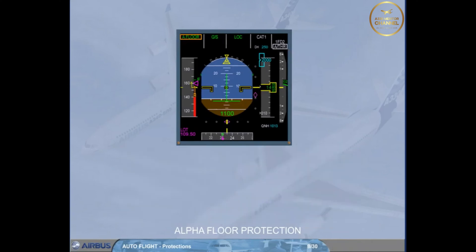When exiting the alpha floor conditions, the autothrust mode reverts to TOGA LK mode, which indicates that TOGA thrust is locked, regardless of thrust lever position.